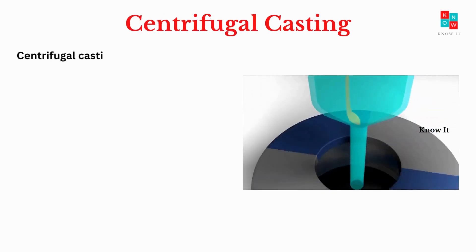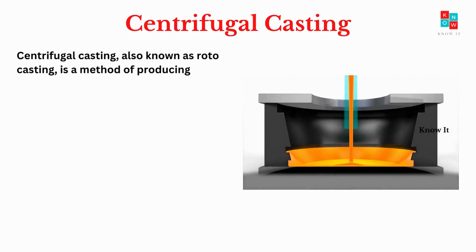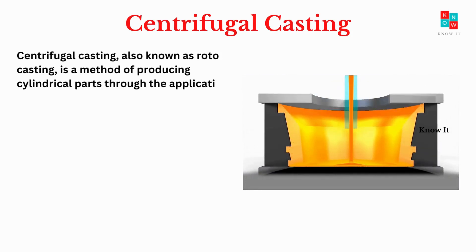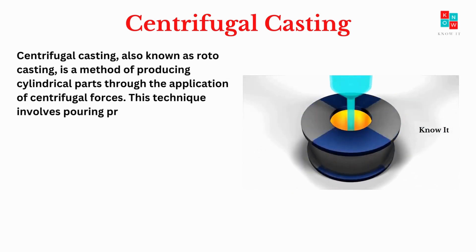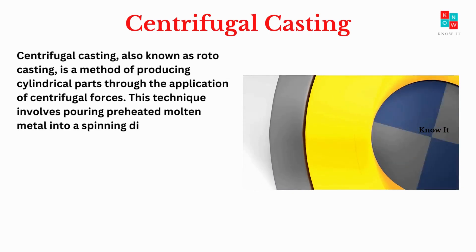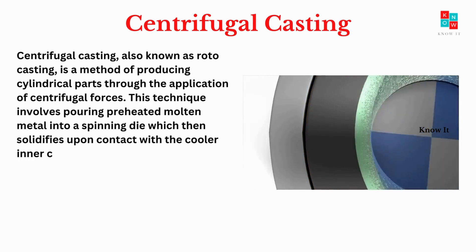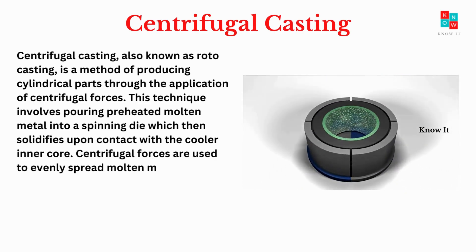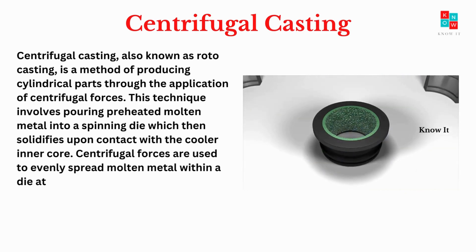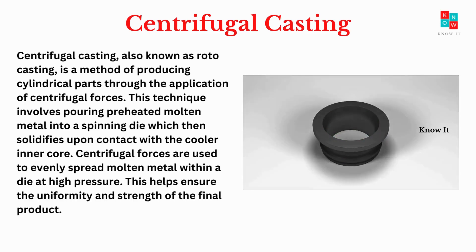Centrifugal casting, also known as roto casting, is a method of producing cylindrical parts through the application of centrifugal forces. This technique involves pouring pre-heated molten metal into a spinning die which then solidifies upon contact with the cooler inner core. Centrifugal forces are used to evenly spread molten metal within a die at high pressure, which helps ensure the uniformity and strength of the final product.